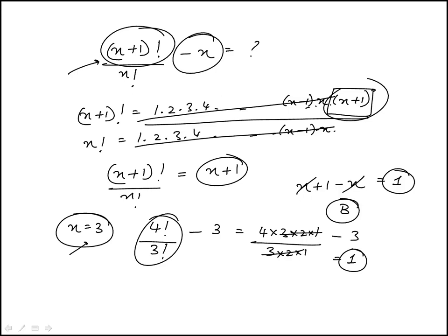And then you would take n equal to 3 and substitute in the answer choices. a is 0, b is 1, c would be 3, d would be 4, and then e would be 3 factorial, which is 6. So clearly, the answer again here is b.